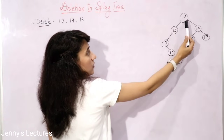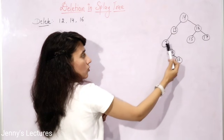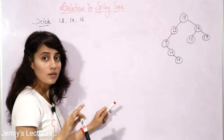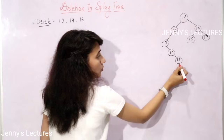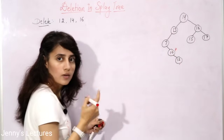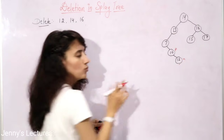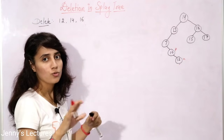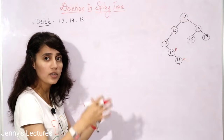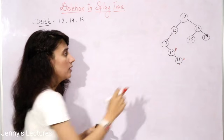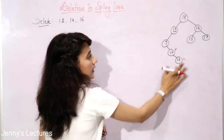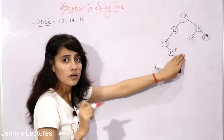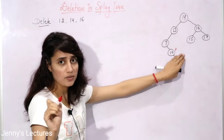Compare: 12 is less than 14, go left. 12 is less than 13, go left. 12 is greater than 7, go right. 12 is greater than 10, go right. Here we find 12. This is a leaf node, so we can simply delete it — no need to do anything else for the BST step. After deletion, the tree is updated, but we are not yet done.